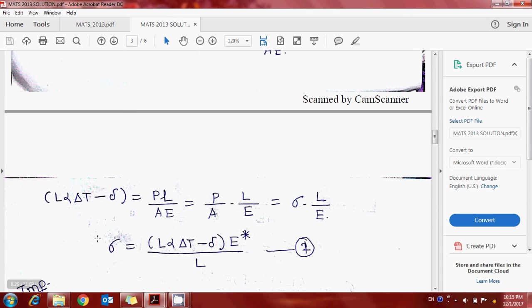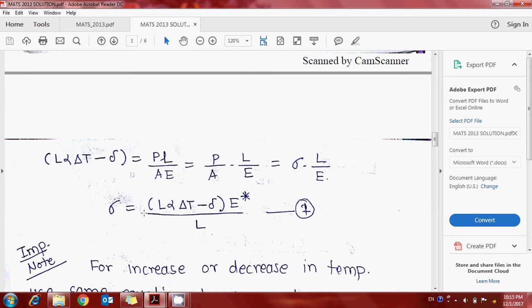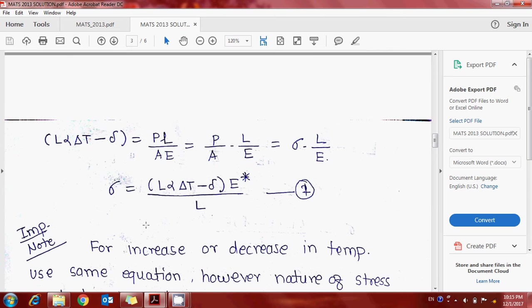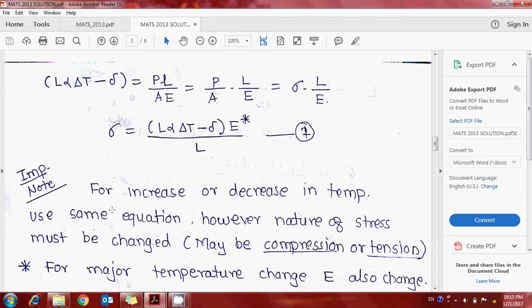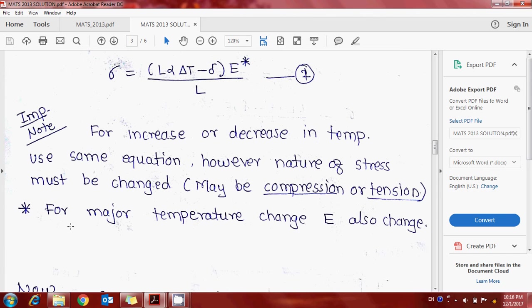Therefore, stress developed is equal to (alpha delta T minus delta) times E divided by L. Important note: for increase or decrease in temperature, you use the same equation, but the nature of stress must be changed - maybe compression or tension.